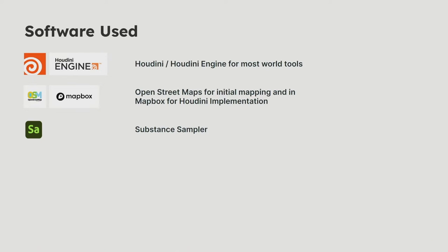The software used today: Houdini and Houdini Engine. All of these tools are HDAs made for Houdini Engine — an artist would work with them, you expose a few parameters and you can work with any of the tools. Next is OSM and Mapbox. Paired together, they're basically like the Google Maps of open source data — with Mapbox you get the height fields, with OSM you get the roads and buildings. We'll show how to use it in many different ways beyond just making a digital twin. Finally, we'll cover basic Substance Sampler for processing textures.